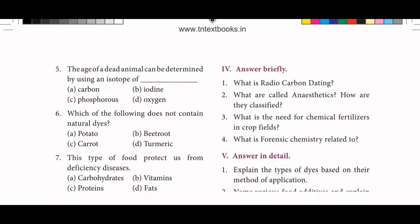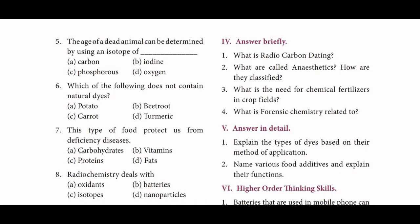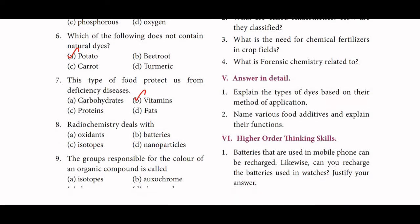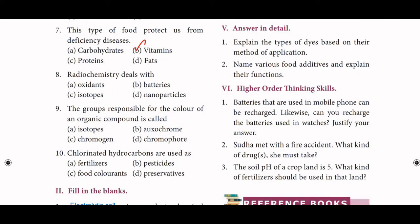5th one: the age of a dead animal can be determined by using an isotope of carbon — this is carbon dating. 6th: which of the following does not contain natural dyes? Potato. 7th: this type of food protects us from deficiency diseases — vitamins. Radiochemistry deals with isotopes. The group responsible for the color of an organic compound is called a chromophore. Chlorinated hydrocarbons are used as pesticides.